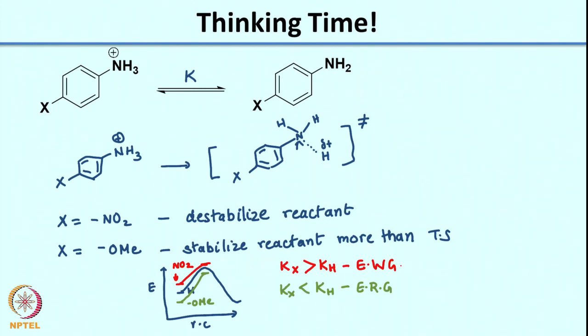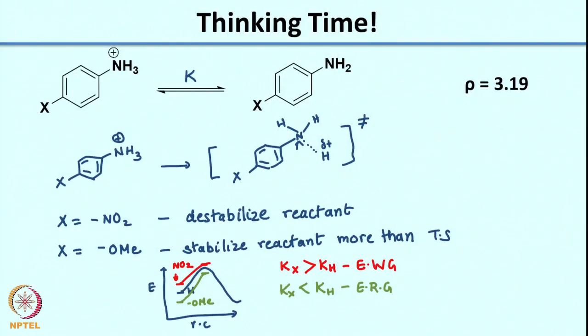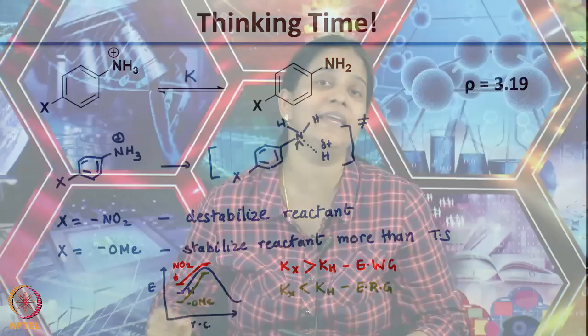This case is very similar to the benzoic acid case. Remember the weighing scale: hydrogen in the middle, electron-withdrawing groups to the right, electron-releasing groups to the left. Electron-withdrawing groups increase the rate of the reaction, so you have a positive slope and a positive rho value. The value is quite high in magnitude — it is 3.19 — because the positive charge in the reactant is in conjugation with the aromatic ring. Whenever you analyze any reaction to determine rho, it is very important to understand how the reaction works. You cannot directly say that a negative charge means positive rho or a positive charge means negative rho. What matters is whether charge is increasing or decreasing from reactant to transition state.